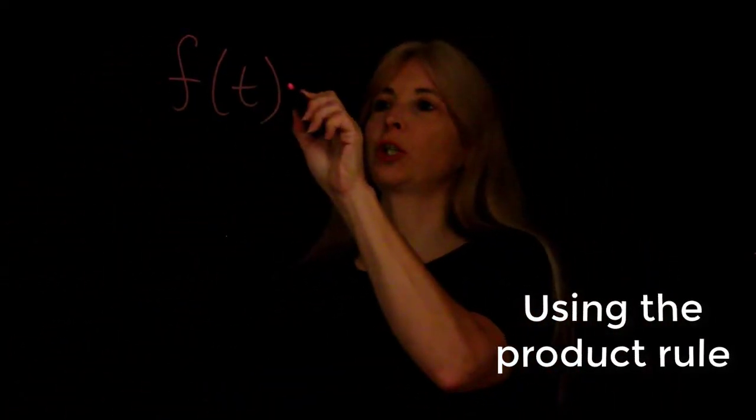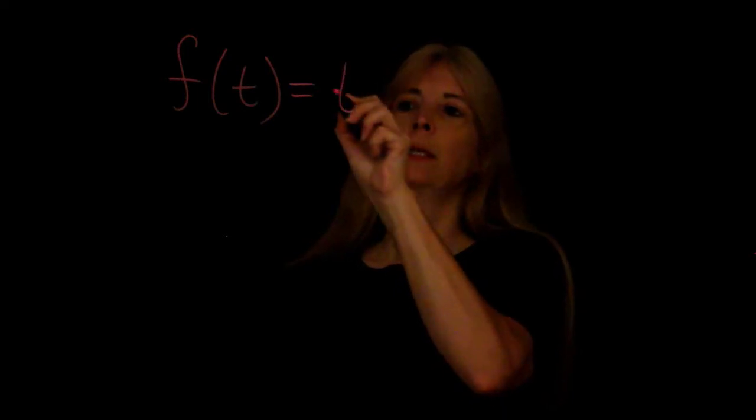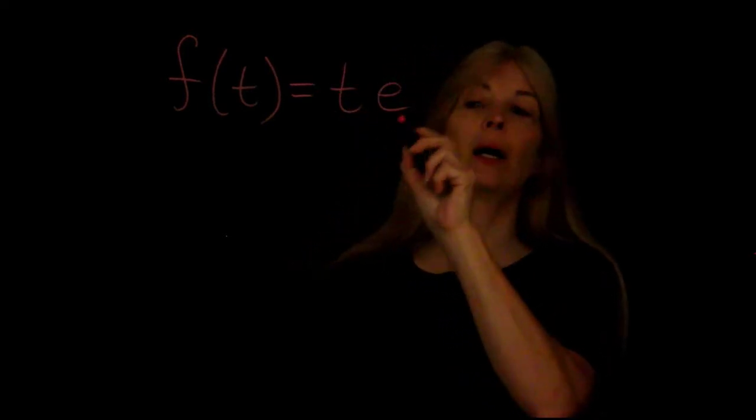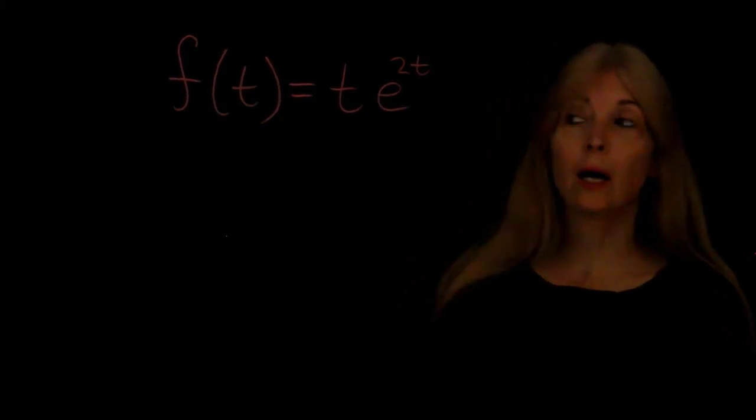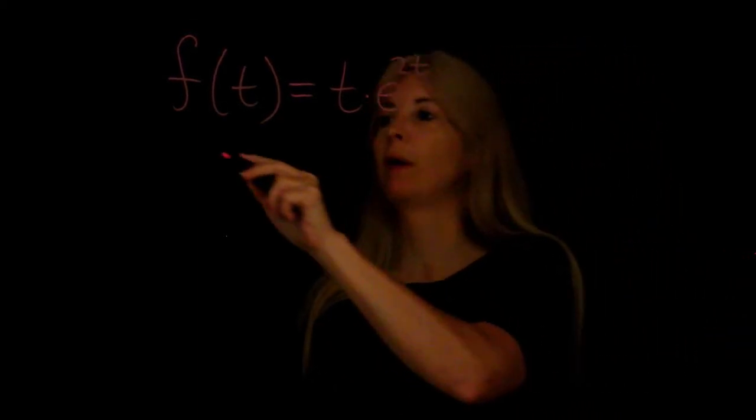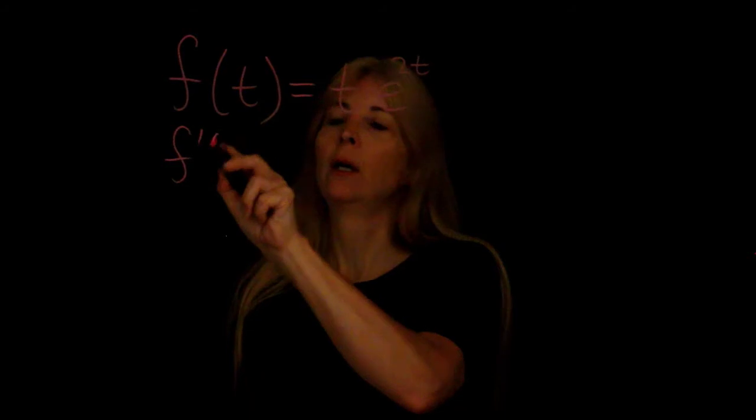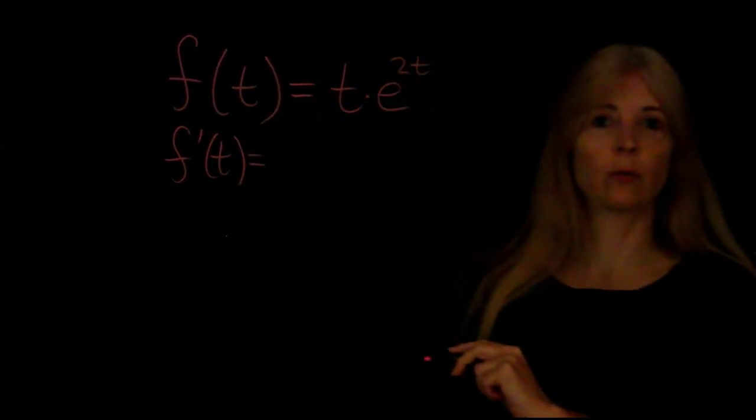Okay, let's say we have a function f of t equals t times e to the 2t. Notice I said times because that means to find the derivative I'm going to need to use the product rule.